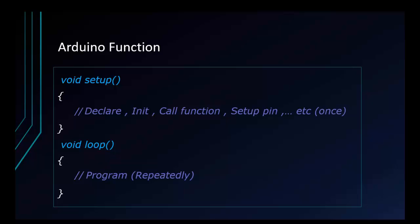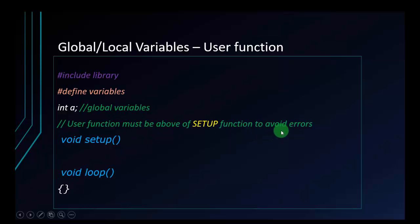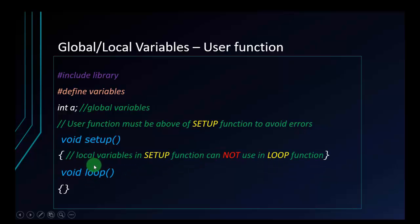We don't need a device to run once and then turn off forever. Here is how we organize global variables, local variables, and user functions. At the top of the text editor, we often include some libraries, then define some variables. Below that, we define global variables that can be used throughout the whole program. Next, user functions should be placed above the setup function to avoid errors. If you want to create a local variable, you need to declare it inside a certain function — for example, a local variable in the setup function.